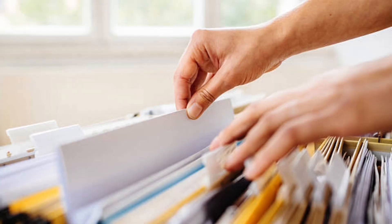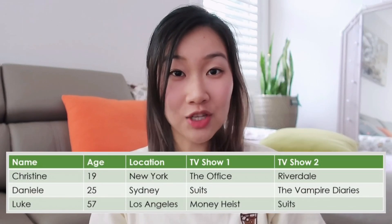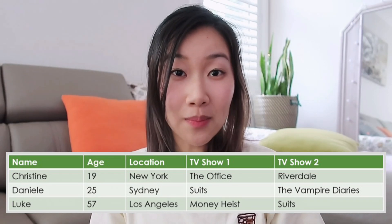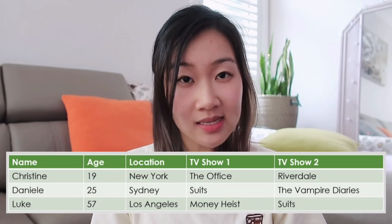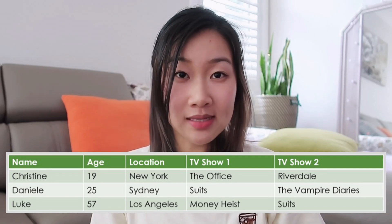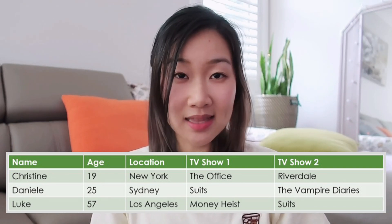Back in the day, data was stored in paper files within physical filing cabinets. But due to technological advancements, data is now stored in tables within databases, collectively known as a data warehouse. As an example, Netflix might track your user profile, your age and location, in combination with the TV shows and movies that you are watching, and save this within tables inside the data warehouse. They would then use this data in order to make better decisions on what TV shows to recommend you next.